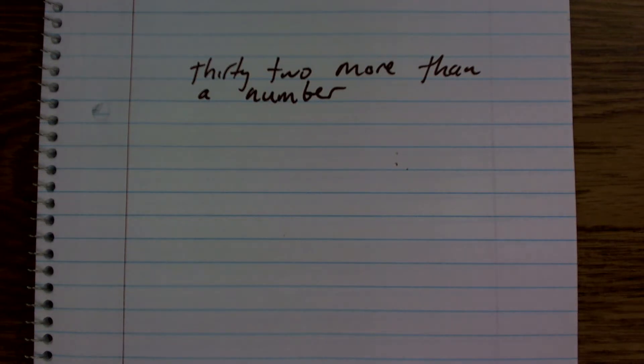Okay, so for this problem I need to translate this from a sentence to an algebraic expression. So what it says is I have 32 and a number.